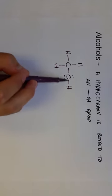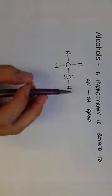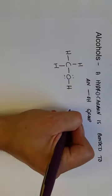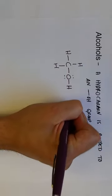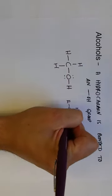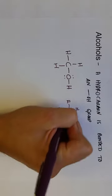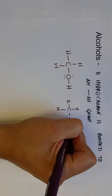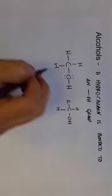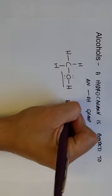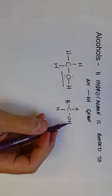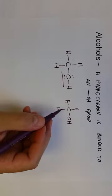Oxygen has two lone pairs as well, but most of the time when we draw organic compounds, we assume we already know that. So what we will just show is that the CH3 group is bonded to an OH group like that — but really it includes those lone pairs. The number of carbons bonded to this OH group can be more.